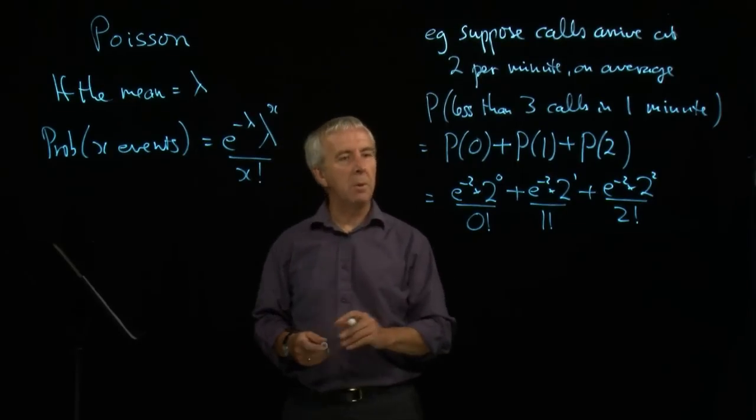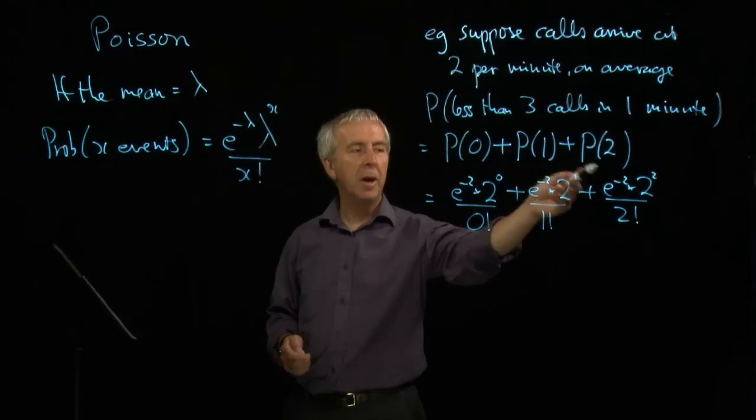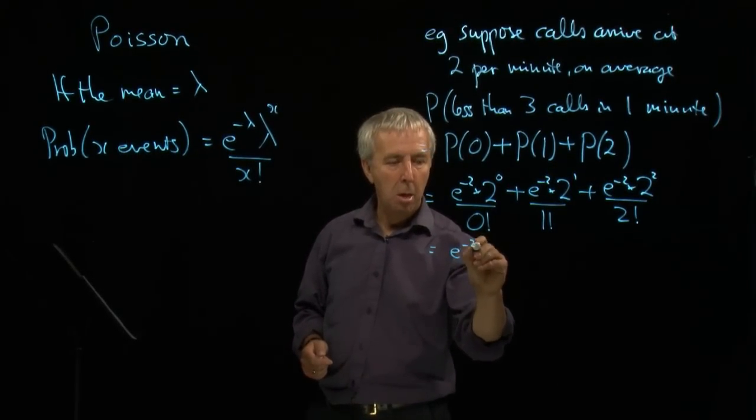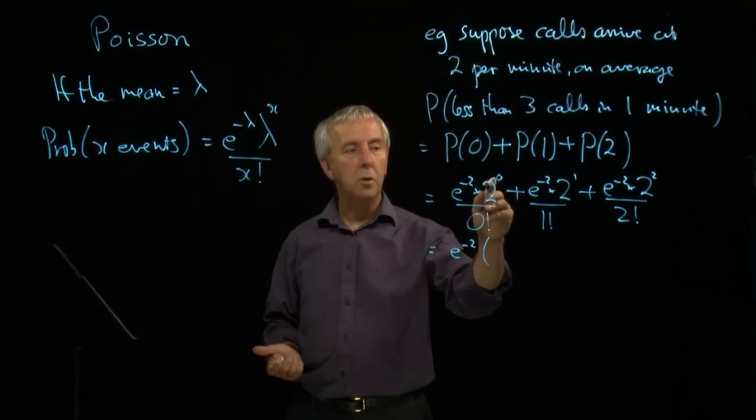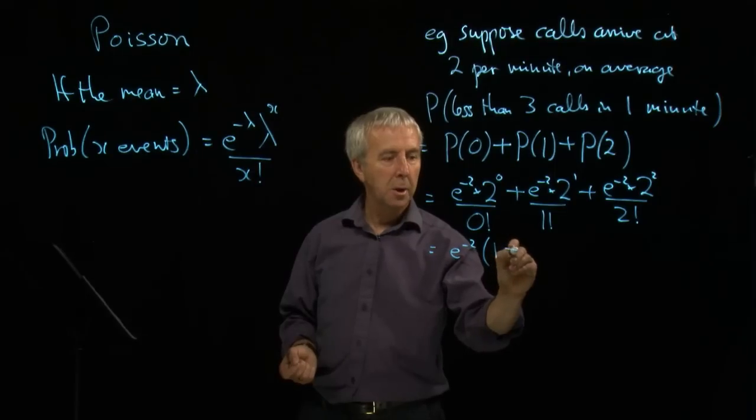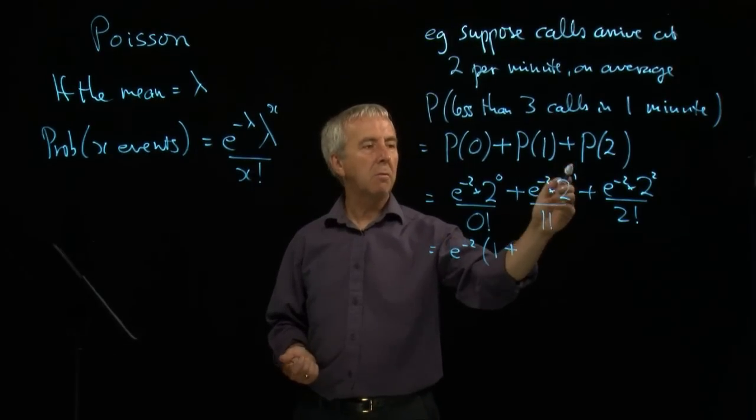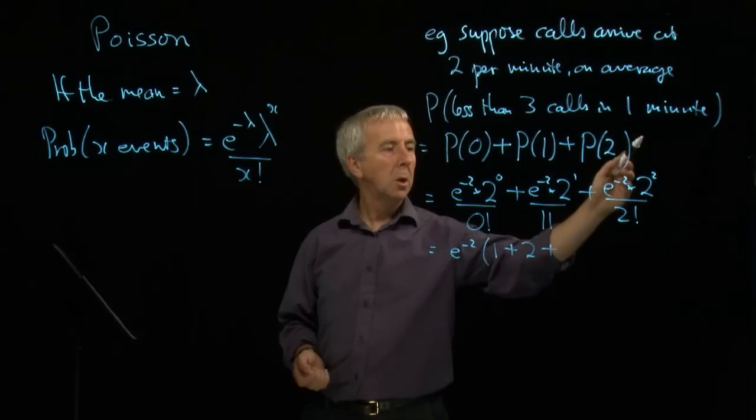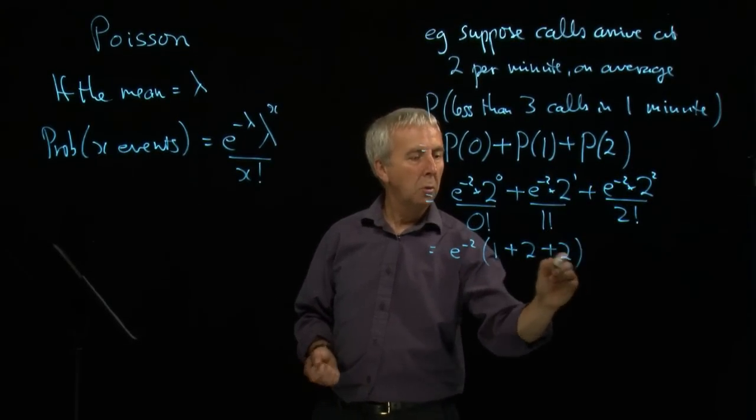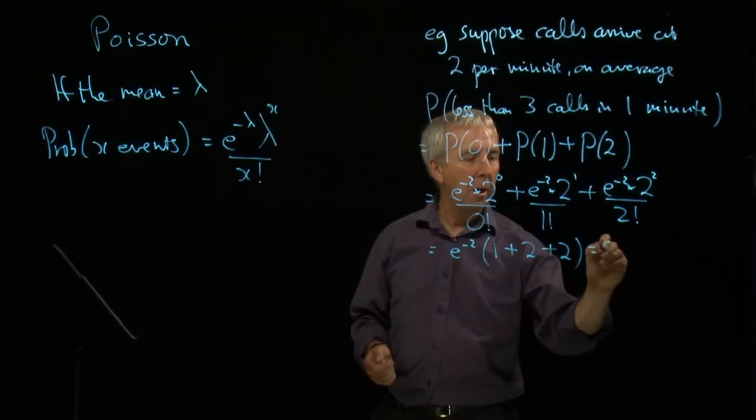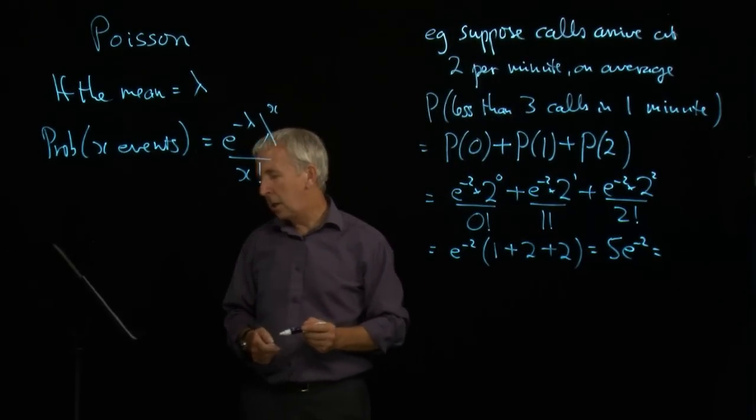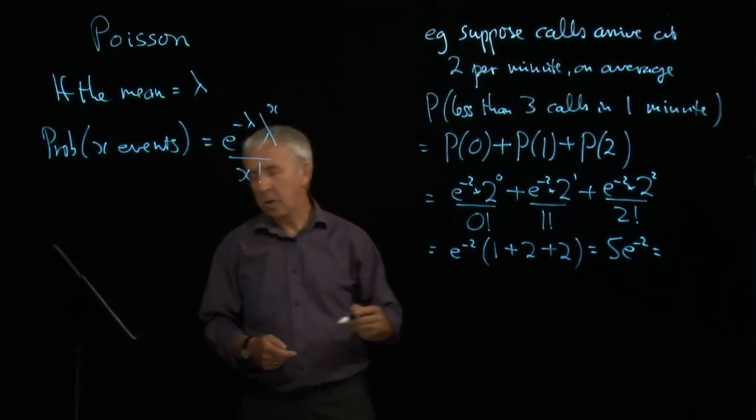One way of simplifying the arithmetic is to take out a common factor of e to the minus two. Two to the nought, anything to the nought is one. Nought factorial is also defined as one, so this is just one. Taking out this factor, I'm left with two over one, which is two. Two squared, four over two factorial is also equal to two. So I end up with five times e to the minus two. And if I look that up, I get 0.6765.